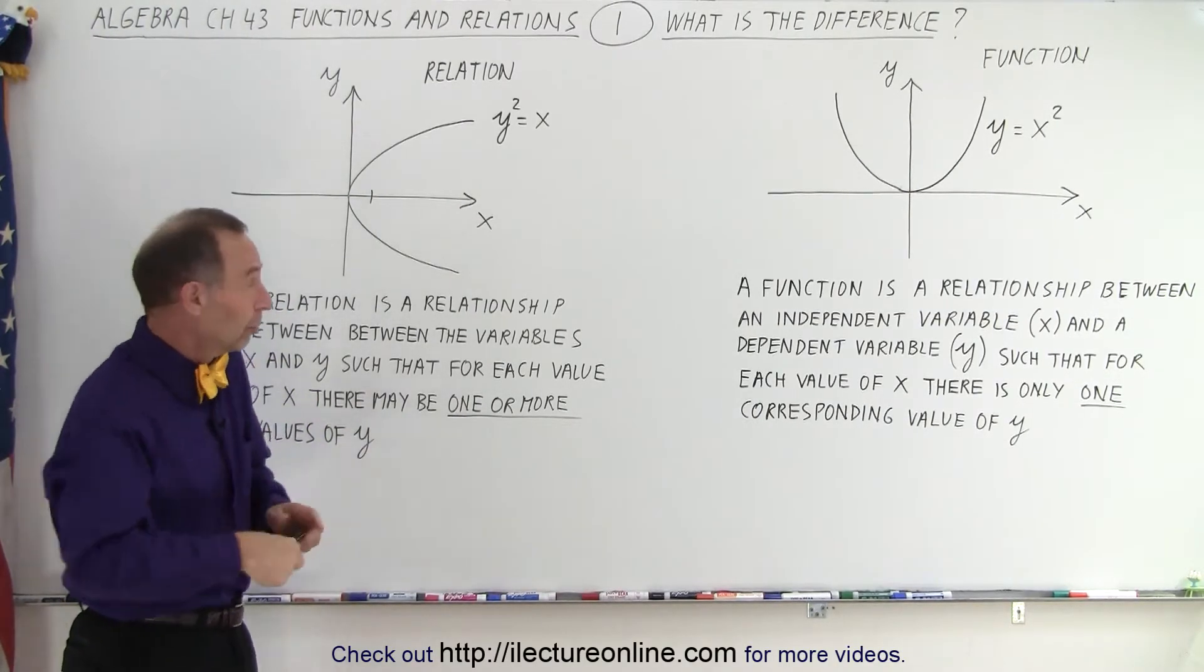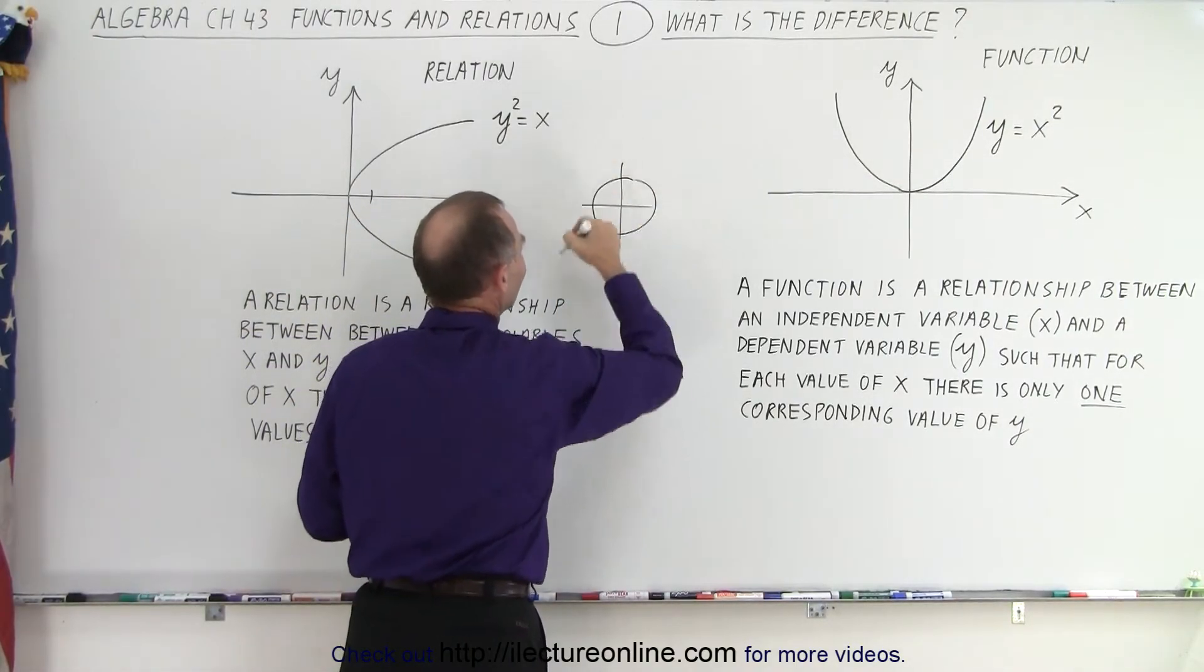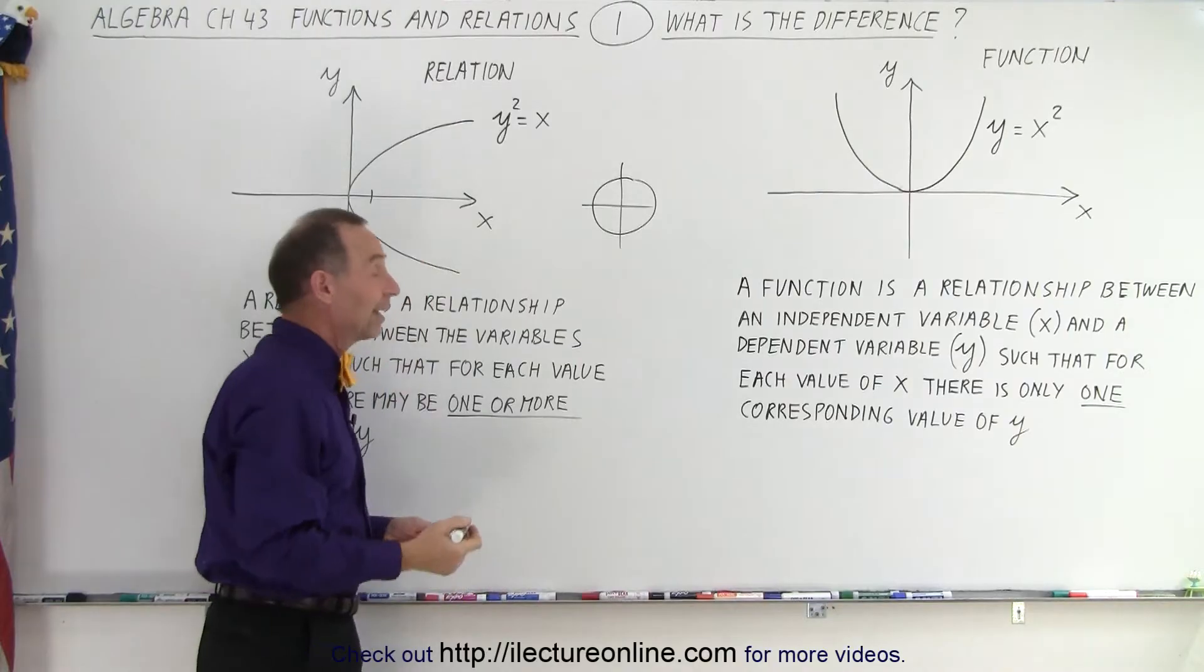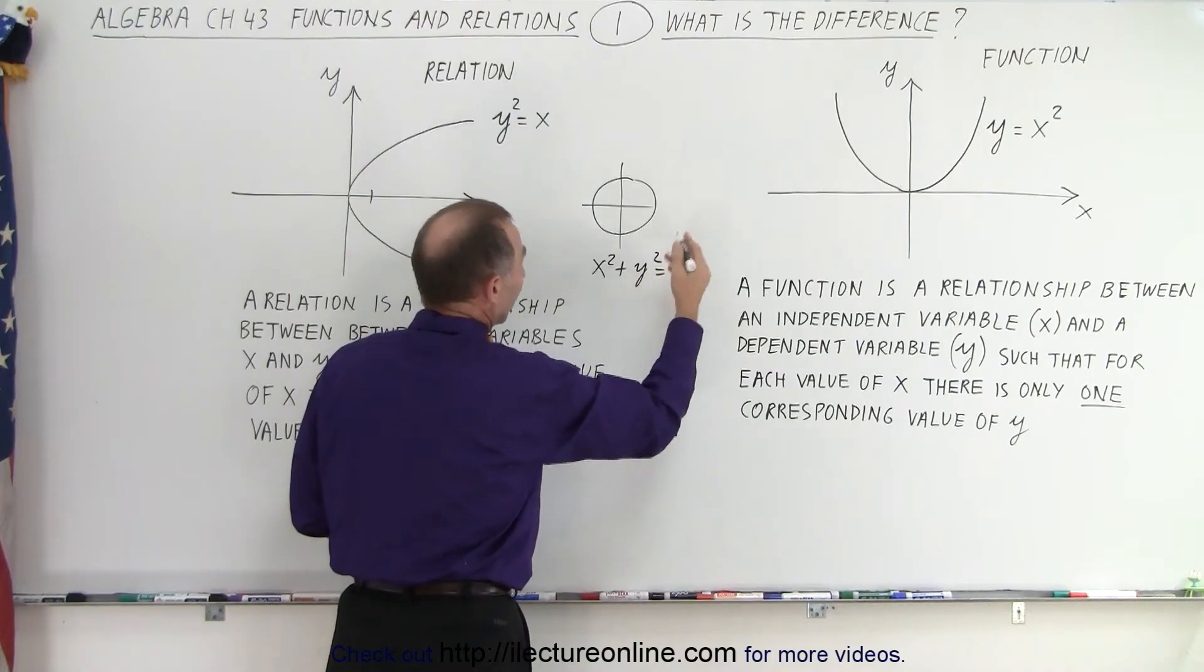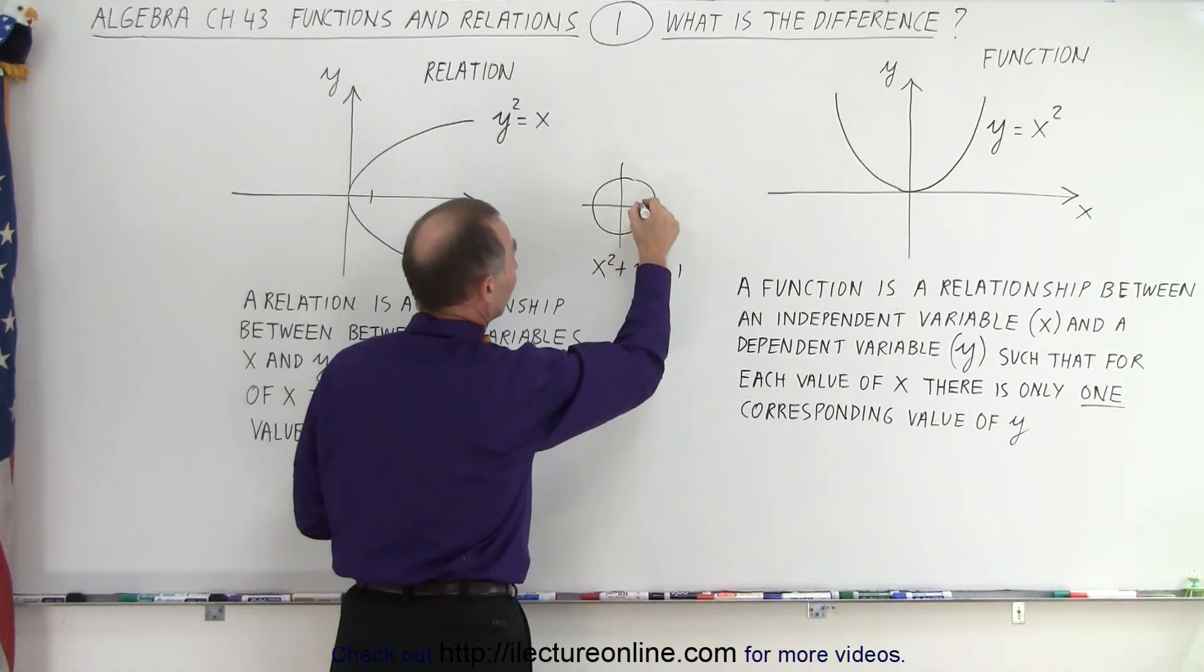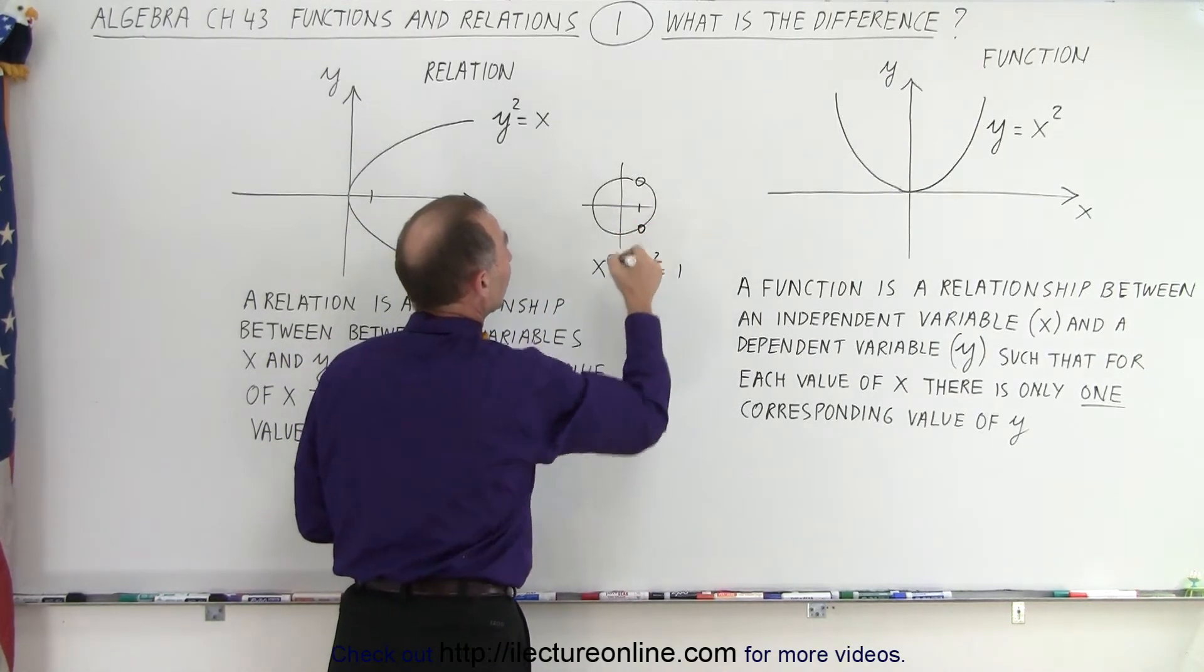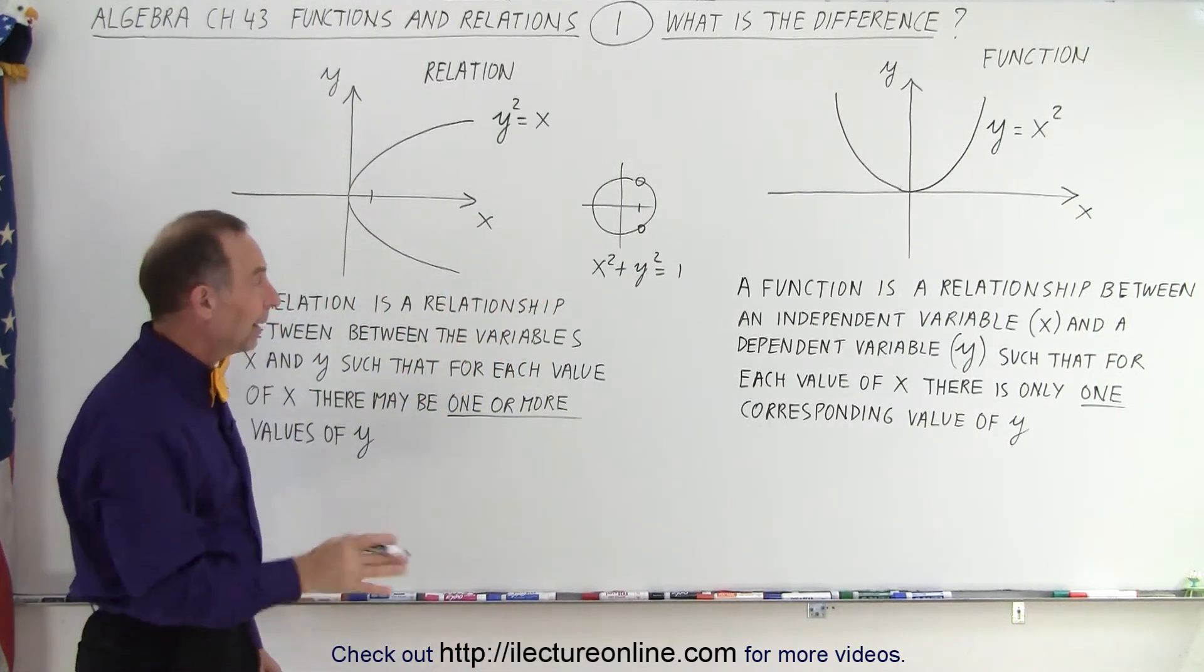So, when you draw a circle, for example, if you have a function that, well, actually, it's not a function, is it? If you draw an equation like x squared plus y squared is equal to one, for example, well, that cannot be a function because you can take a particular value for x, which gives you two possible values for y. And again, that makes it a relation and not a function.